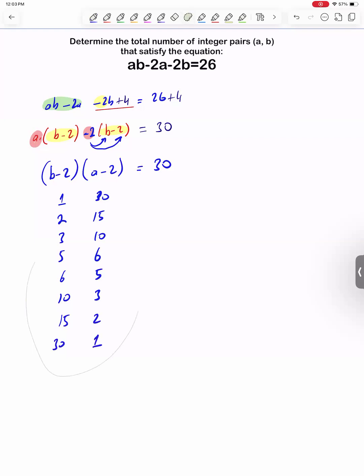We shouldn't forget the negatives since it is integer. It could be negative 1 times negative 30, negative 2 times negative 15, and so on.